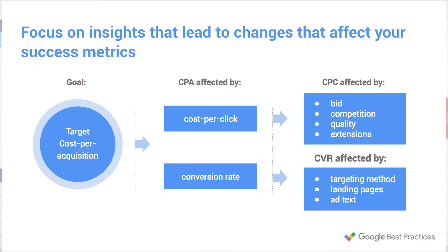If you start by understanding what's happening in your account, you can dig in just a bit deeper to uncover why something might be occurring. From there, you can take steps to replicate successes and eliminate shortcomings. Start with your overall success metric, create a report that illuminates a certain facet of that metric, and then use that report to drive action.